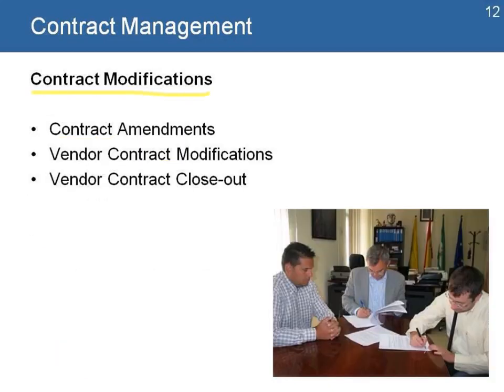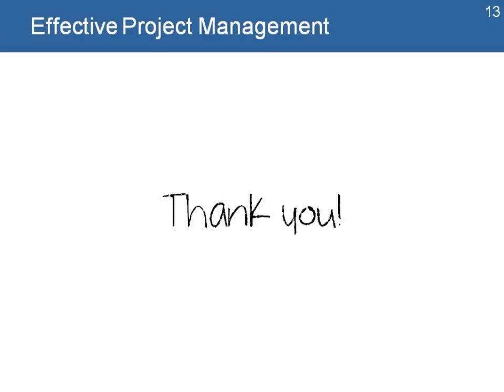Contract modifications include changes, contract amendments, and vendor contract modifications — which happen when there is a need from the project to change anything on the contract — and the process to close the contract, making sure that we don't have anything outstanding and that we are able to meet all the requirements of the contract. That's the end of the presentation. Thank you for your attention.